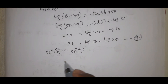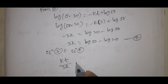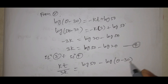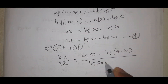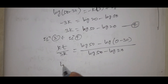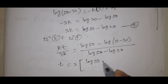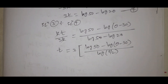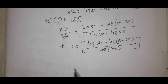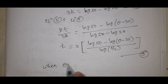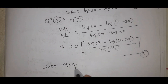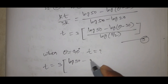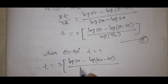From equation 4, KT over 3K equals log 50 minus log theta minus 30, divided by log 50 minus log 20. The K's cancel, giving T equal to 3 into log 50 minus log theta minus 30, divided by log 5 by 2. This is equation number 5. When theta equals 40 degrees, we substitute.